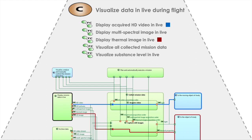The drone has a ground terminal made of a joystick and a tablet, and it is sending the collected data from the flying object to the ground, to the tablet. Data can be visualized in live or after the flight is completed. This capability — visualizing data in live during flight — involves several kinds of data: display acquired image video, display multispectral image, thermal image, and so on. This capability is illustrated by several functional chains, with one chain highlighted in blue and another in red on the diagram.